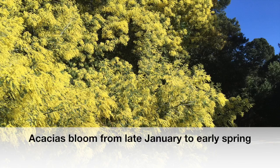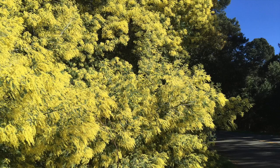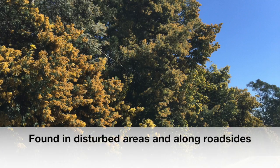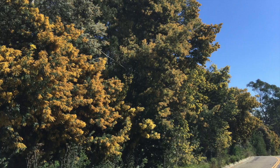In California, acacias generally bloom from late January to early spring, and some of the species produce eye-catching displays of yellow. They are generally found near the coast, in disturbed areas, and along roadsides, and can naturalize in wildlands, especially those adjacent to urban areas.